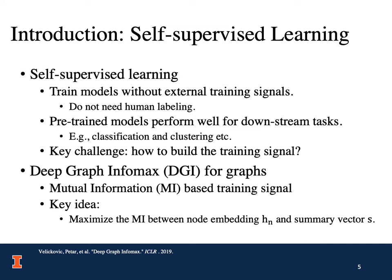Recently, DeepGraphInfoMax has proposed a mutual information-based training signal. The key idea of DGI is to maximize the mutual information between node-embedding H_N and the summary vector S of the entire network.